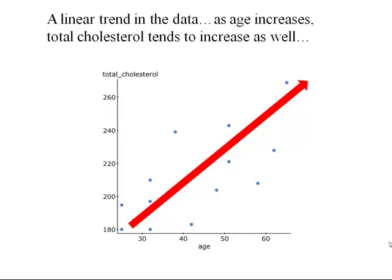Our next step is going to be to go beyond just looking at the scatter plot and saying there appears to be a linear trend, to actually calculating a measure that will quantify that linear trend. That measure is called the linear correlation coefficient, and that'll be the subject of our next video.